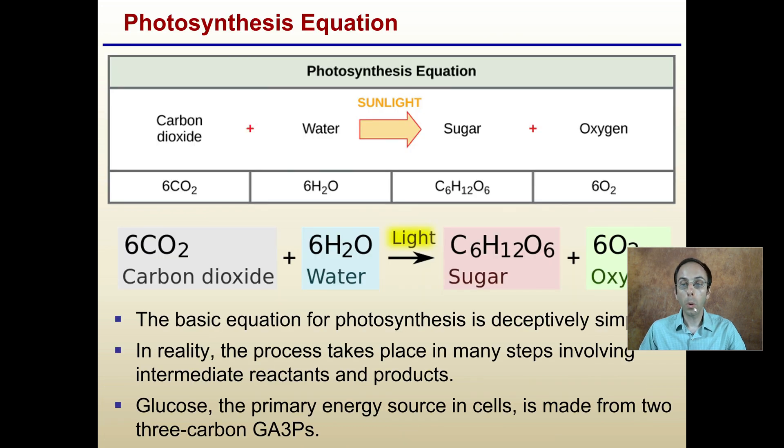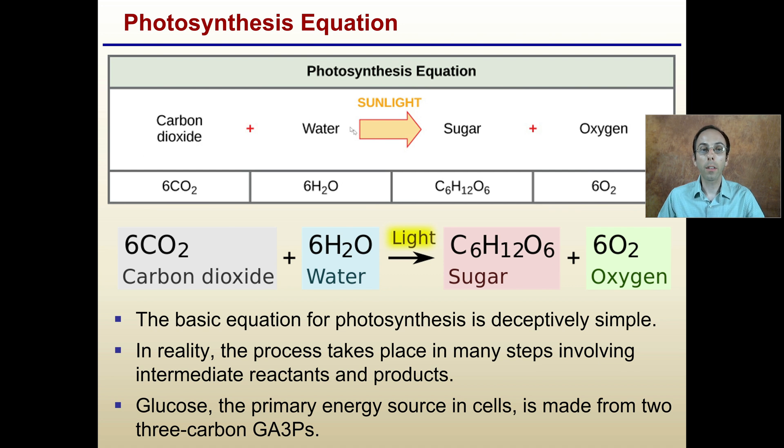The equation for photosynthesis, which you might be familiar with, is carbon dioxide plus water and sunlight, producing sugars and oxygen. It takes six carbon dioxides, six water molecules, and light energy to produce one glucose molecule and six oxygen molecules. It's deceptively simple when you look at it this way, but there's a very complex sequence of steps that derive this.